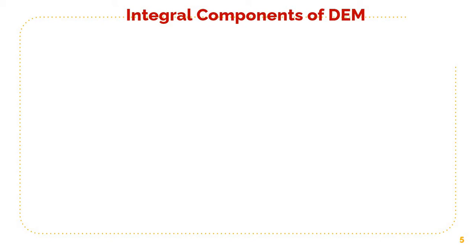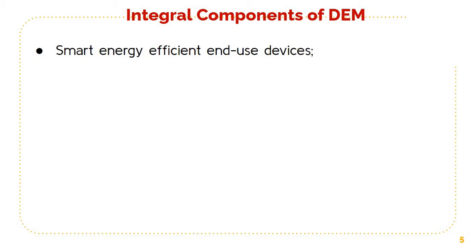Now let us see what are the integral components of DEM. The first one is smart energy efficient end-use devices — all appliances, lighting, space conditioning and industrial process equipment with the highest energy efficiencies — and thermal energy storage systems that allow for load shaping.